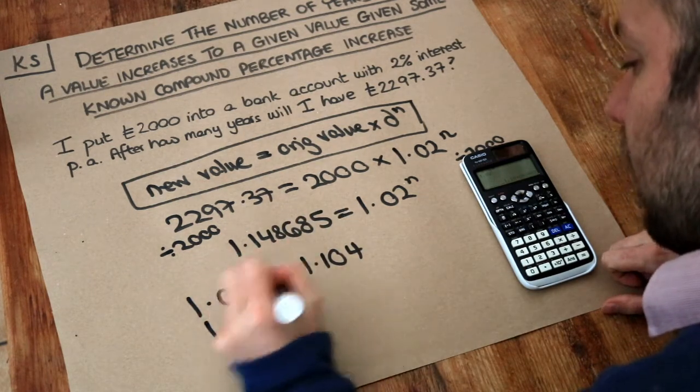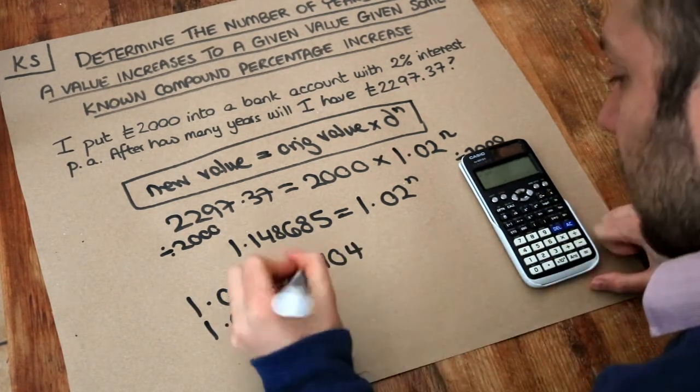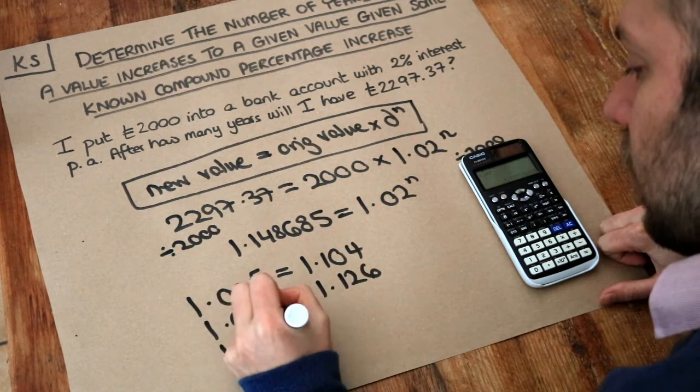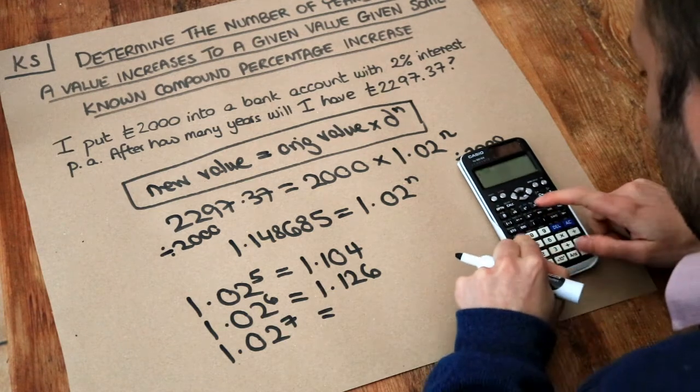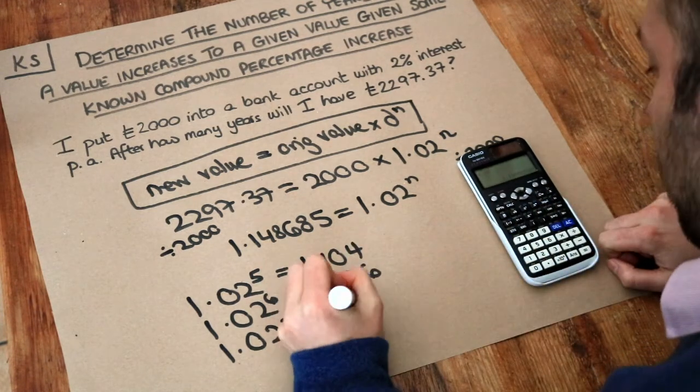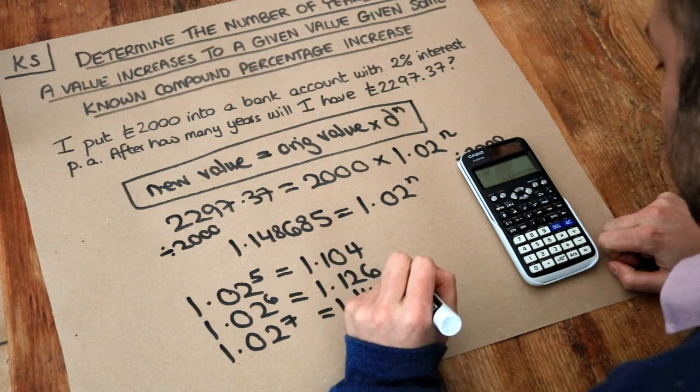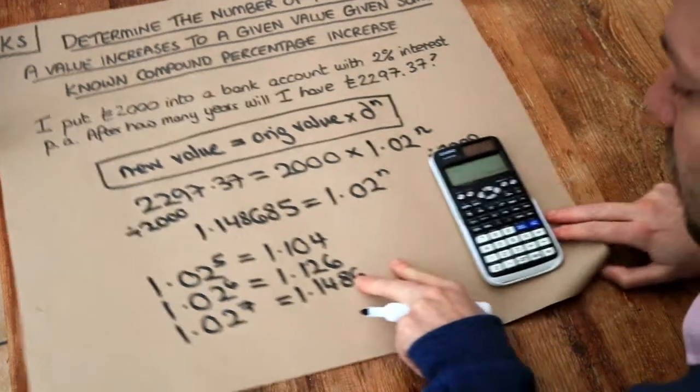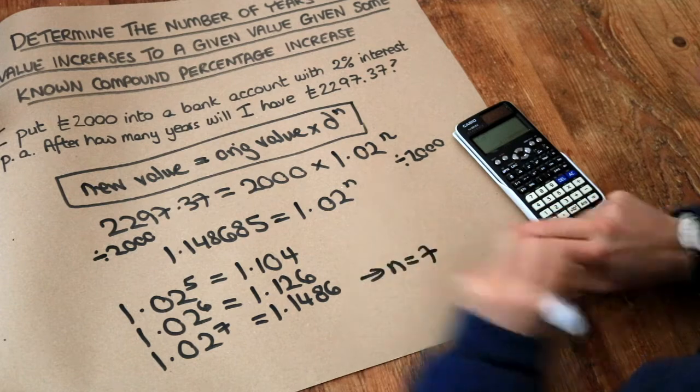1.02 to the power of 6, that's 1.126. And then finally 1.02 to the power of 7, let's hope it gets there this time. We get 1.1486, etc. And we can see that is the value that we want here. It does match. So the answer is 7. n is 7 years where we'd get the amount that we want.